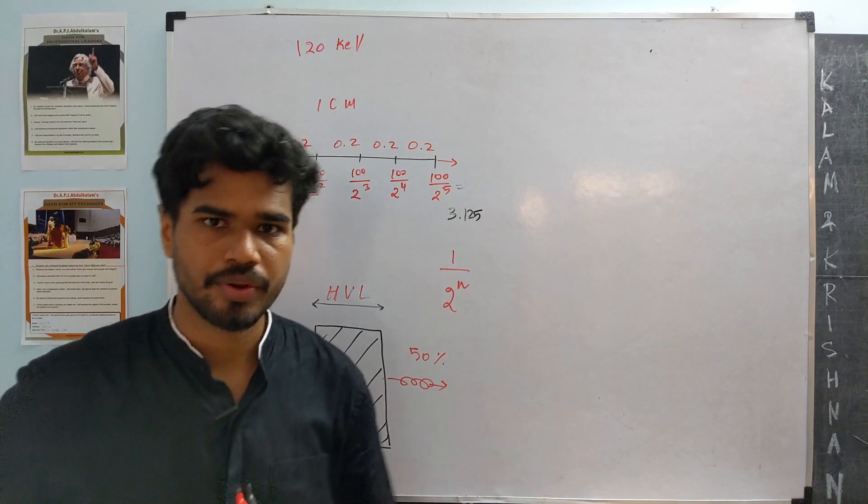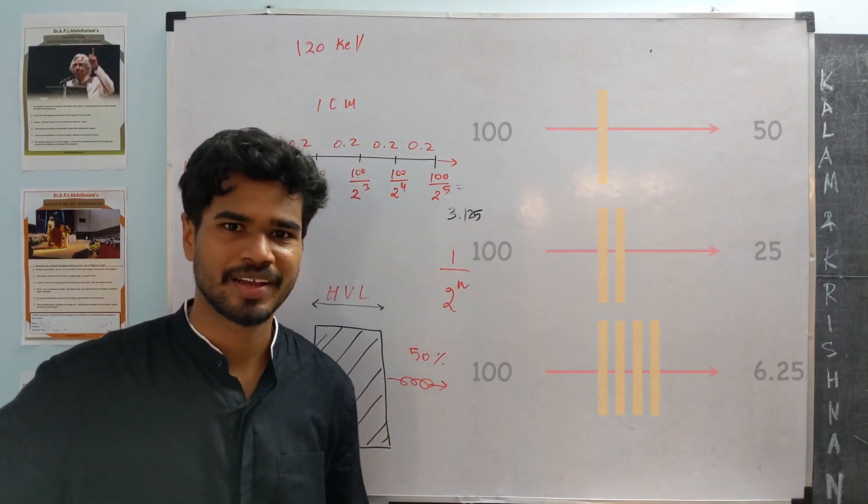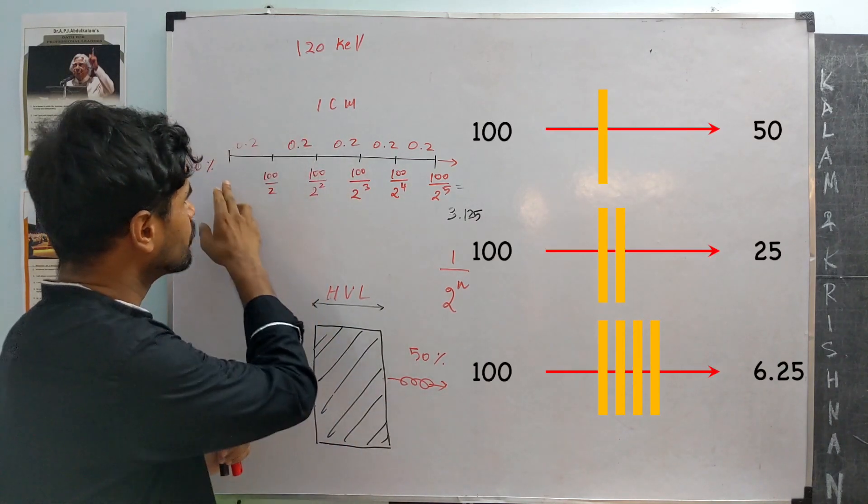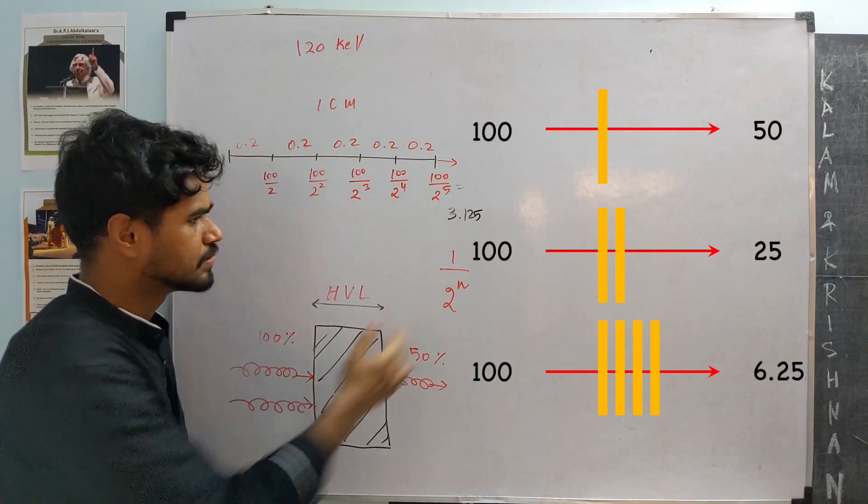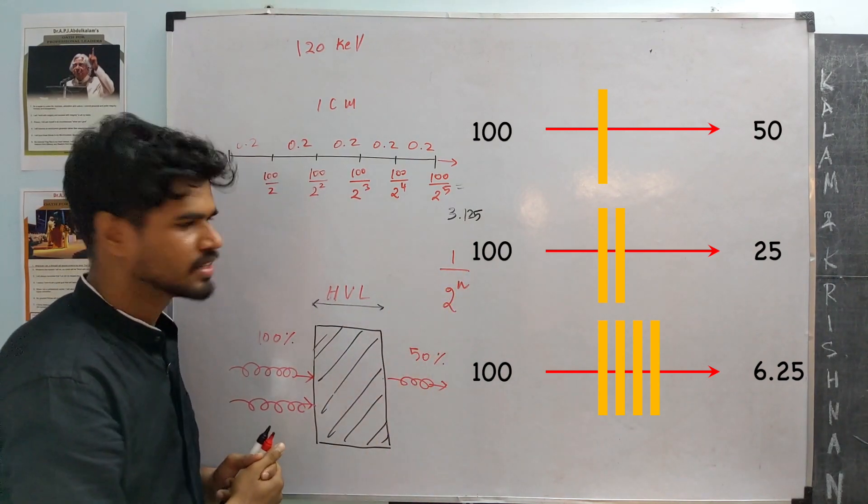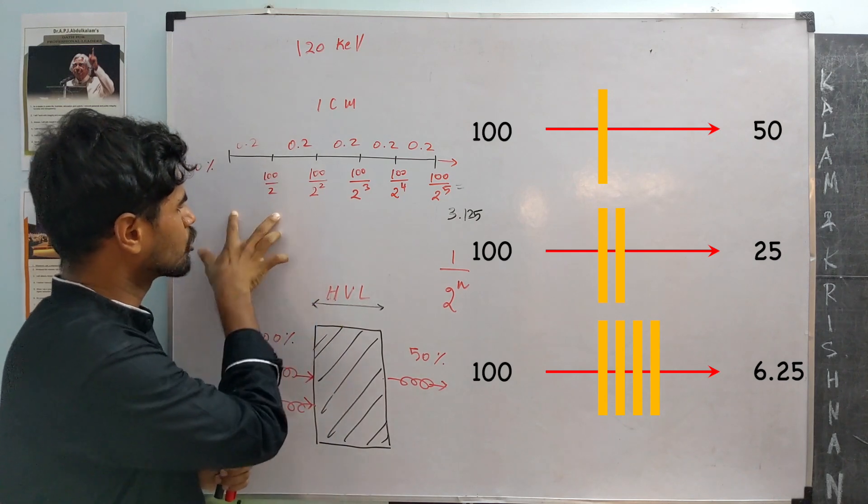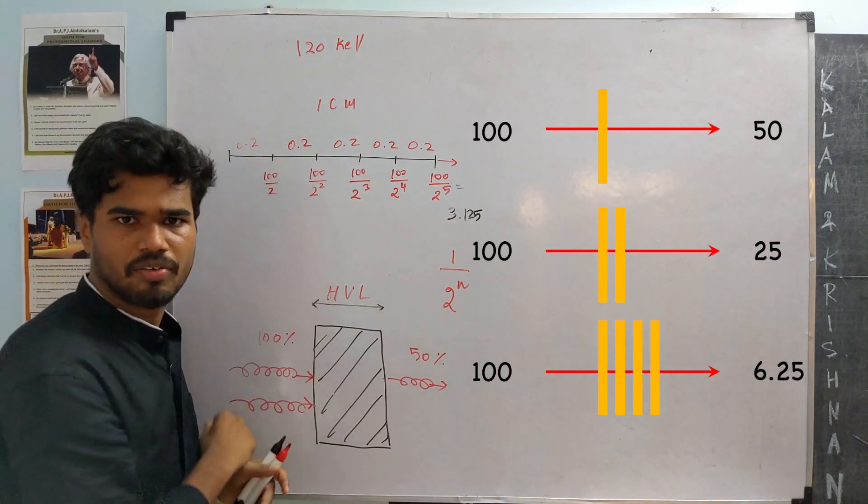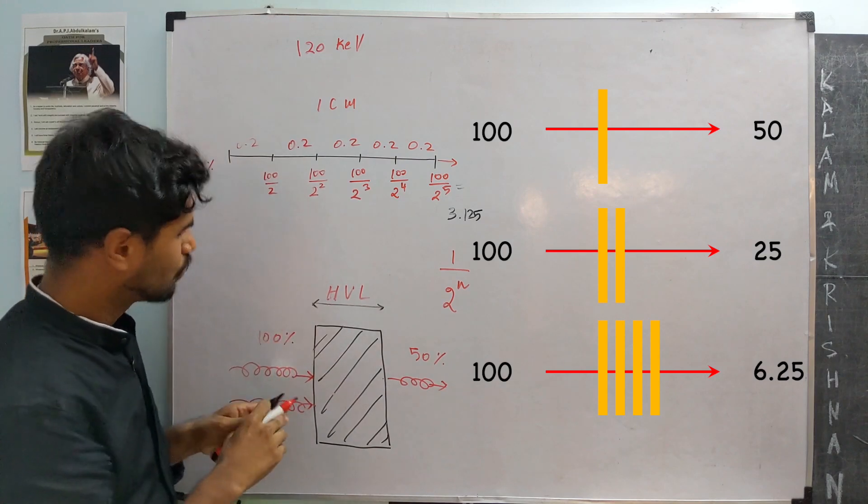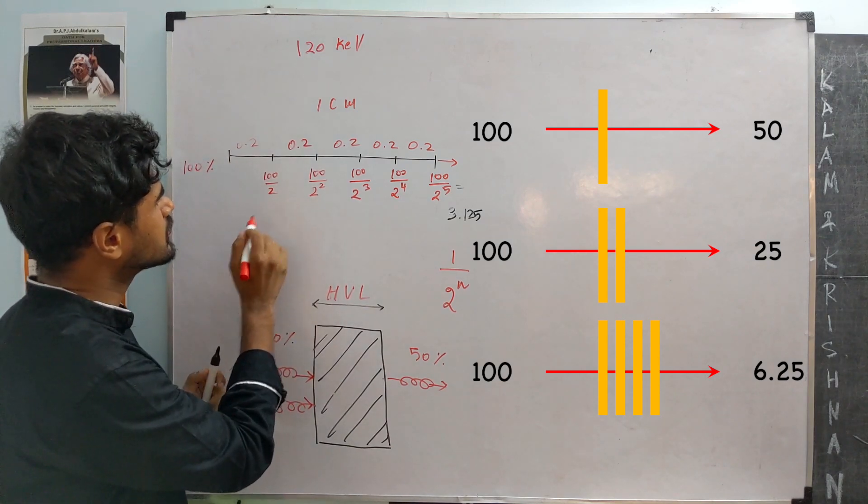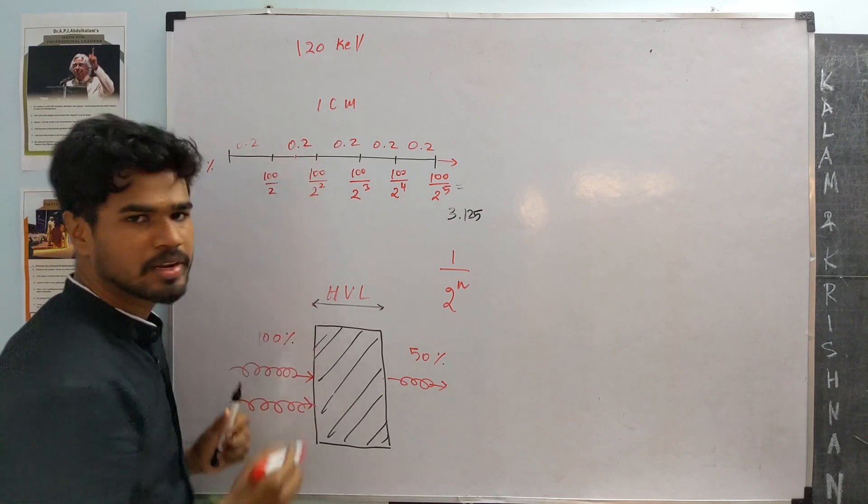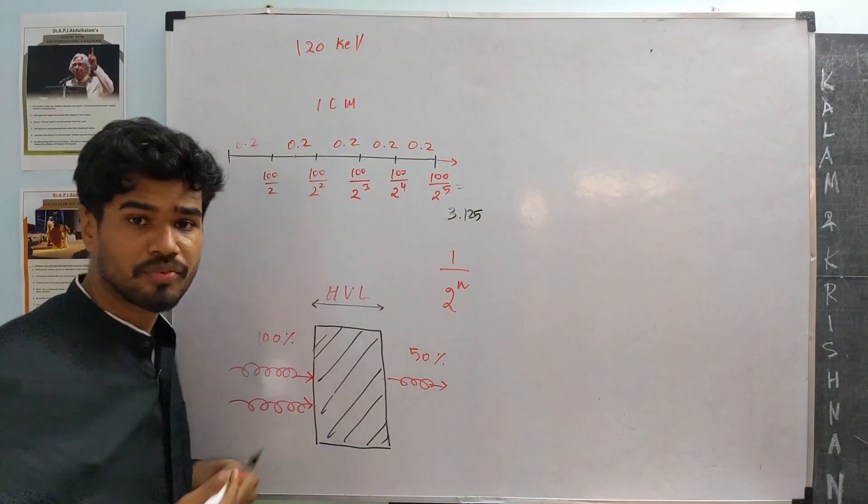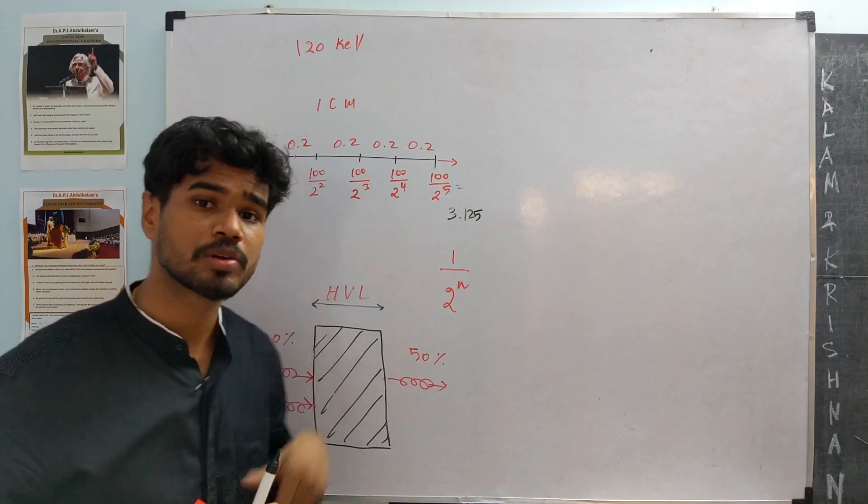At this stage, a very curious student might ask, okay, we know what to do if things pass to thickness of integer half-value layers, which is 1 by 2 power n, right? One half-value layer drops by half. Another half-value layer drops by another half. But what if the total thickness is somewhere in between, say one half-value layer and two half-value layers, say it is 1.5 half-value layers, how much will the drop be?